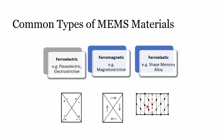These are the common types of MEMS materials available in the market. We have ferroelectric materials, ferromagnetic materials, and ferroelastic materials. The properties of all three are changed based on three different material properties: the electric dipole moment, the magnetic dipole moment, and the stresses being developed within the material, giving different responses accordingly.